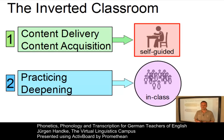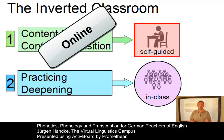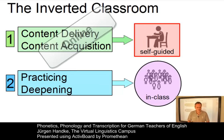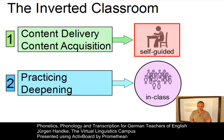Prior to each in-class meeting, students must have worked through the online content of the respective unit. In phase one, you are the autonomous learner. You learn at your own time, wherever you want, how long you want, and how often you want. The content you are given is multimodal and involves all sorts of channels.